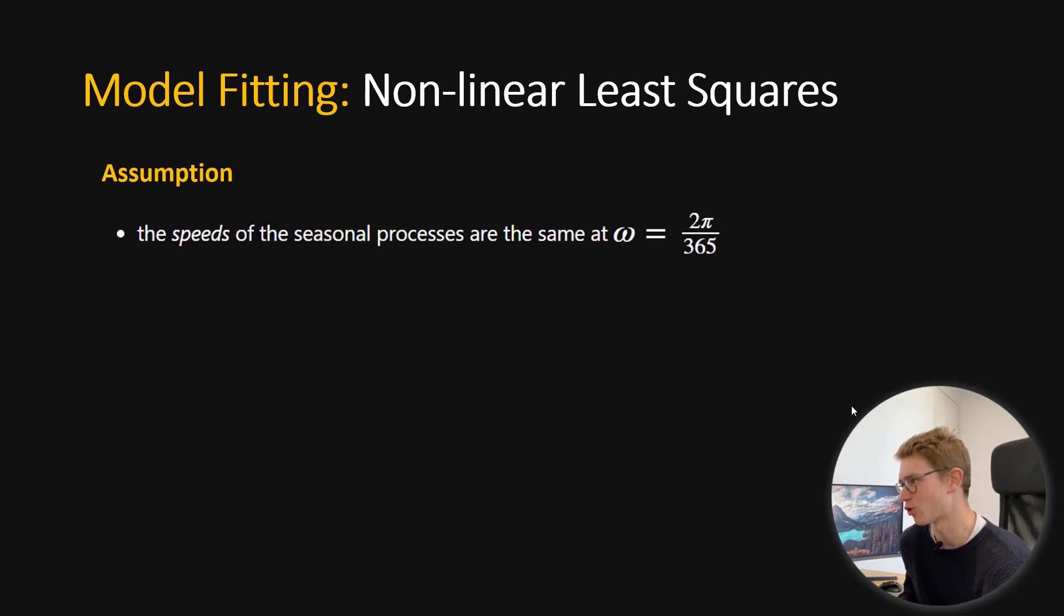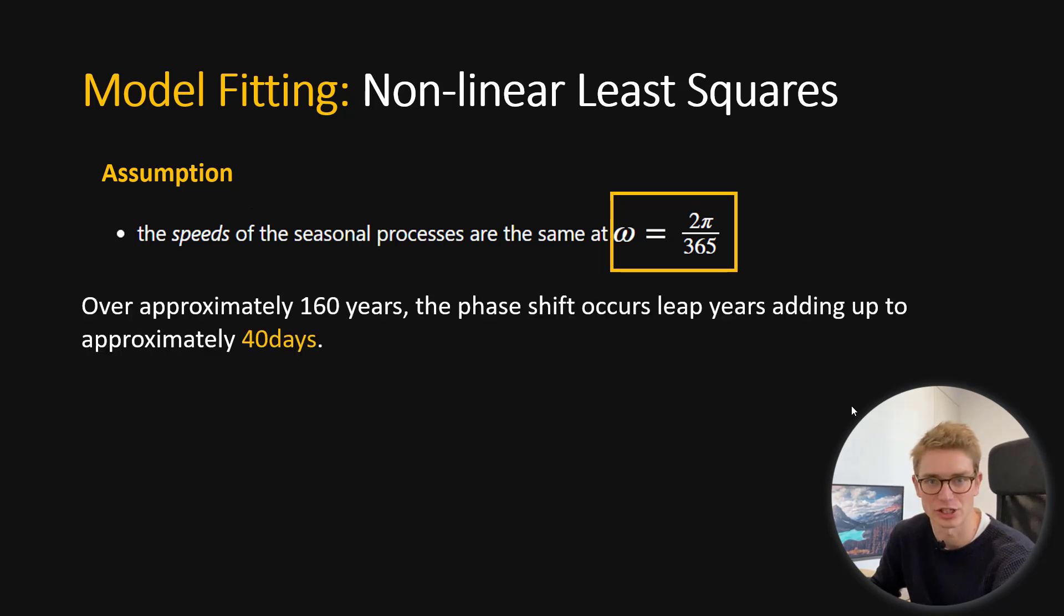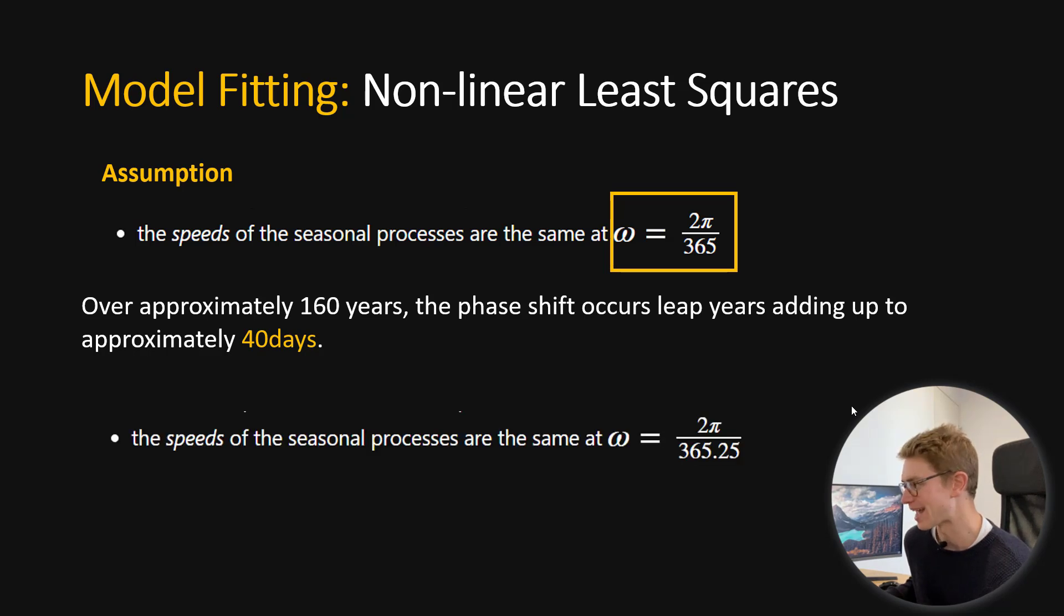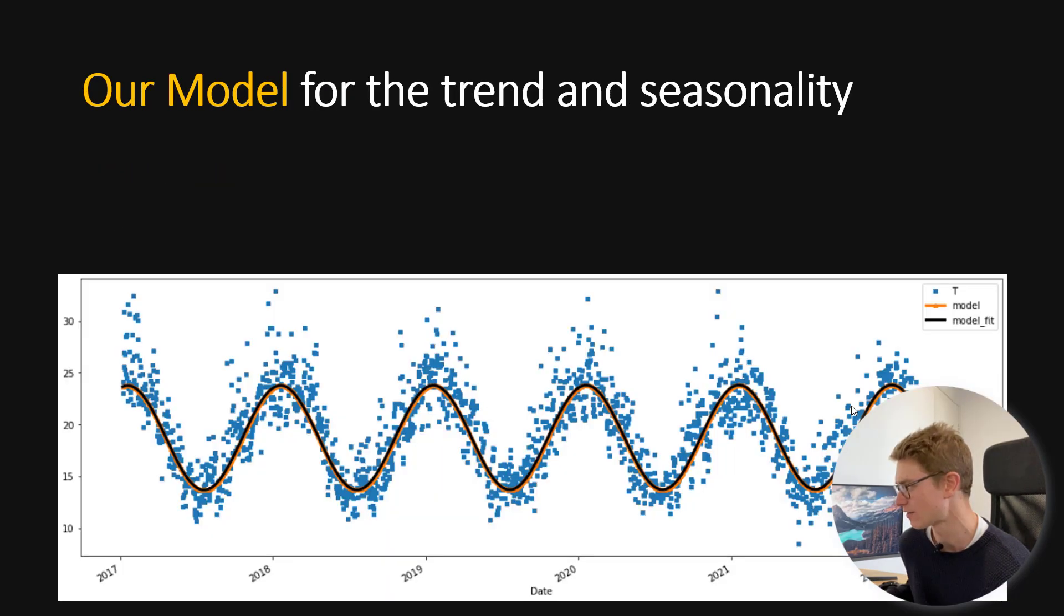I sat here and stumbled over this question for a while before realising that it was our assumption on our speed of the seasonal processes, so our frequency, that was incorrect. Here I assumed that this omega, the frequency, was 2pi over 365, but because we're using such a large number of data points, approximately 160 years, the phase shift occurs because of leap years adding up to approximately 40 days. So, this 0.25, because a year is 365.25 or thereabouts days per year, this was leading to a 40-day phase change. And essentially, when we remade the assumption of omega 2pi over 365.25, we got a great fit for our trend and seasonality.